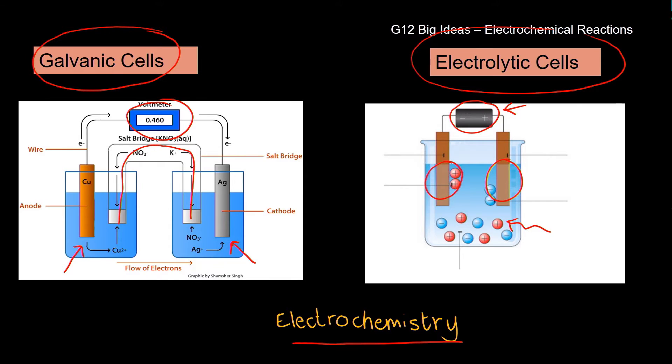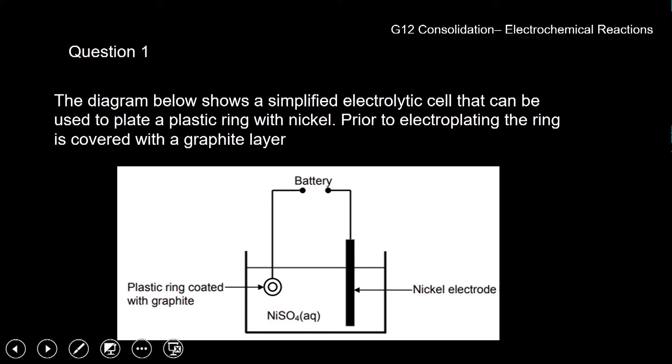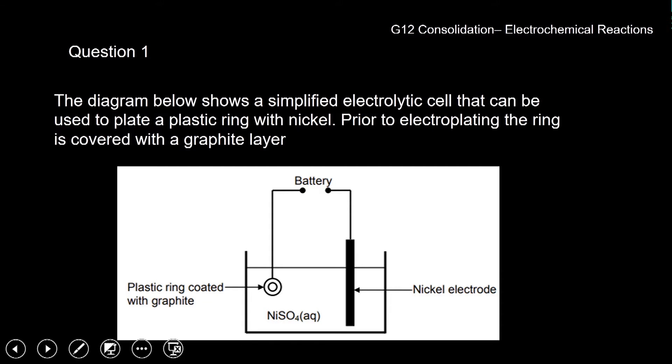We are going to look particularly today at electroplating, and that falls under the chemistry of the electrolytic cells. Grade 12, this question asks us to use our knowledge of the electrolytic cell and unpack what electroplating is. Electroplating is where we take a metal that is not very precious but is very useful, and we cover it with a very thin layer of a more expensive metal. The diagram below shows a simplified electrolytic cell used to plate a plastic ring with nickel.